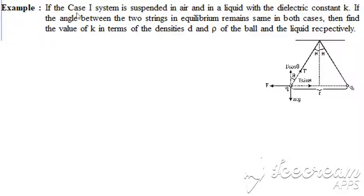Based on the case that we just talked about, Case 1, there's an example. Let's solve this. If we use the system of Case 1 once in air and another in liquid which has a dielectric constant k, and in both cases the system makes the same angle, then we need to find the k value in terms of densities - density of ball and density of liquid.